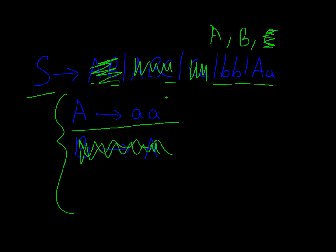I will write the solution properly. S produces terminal string bb as well as symbol A terminal A, and symbol A produces terminal string aa. This is our solution.